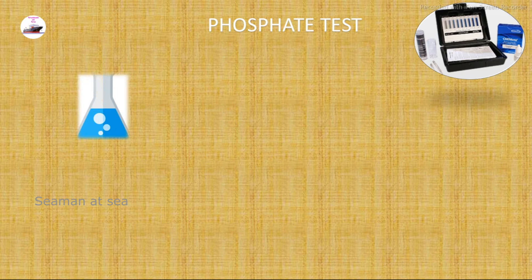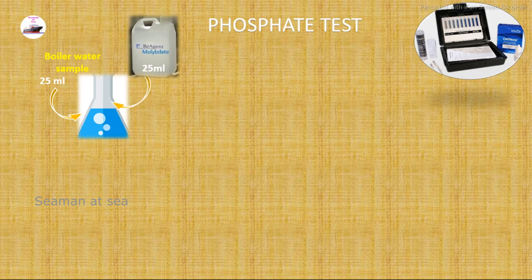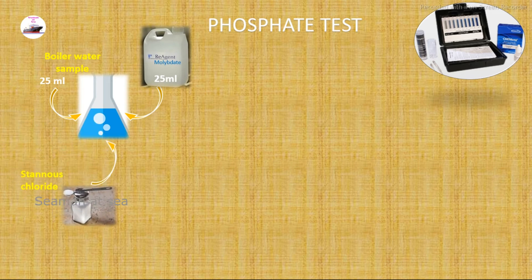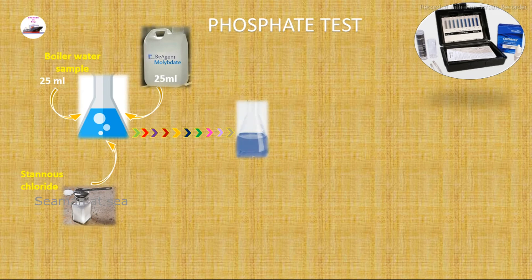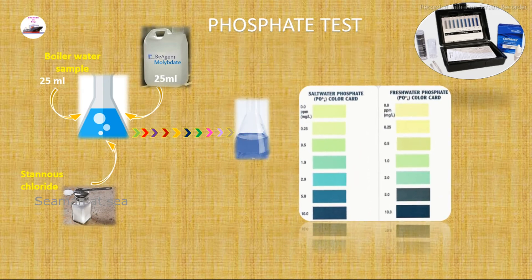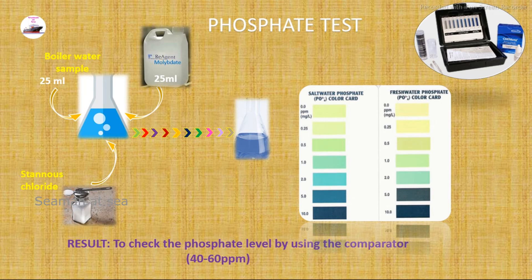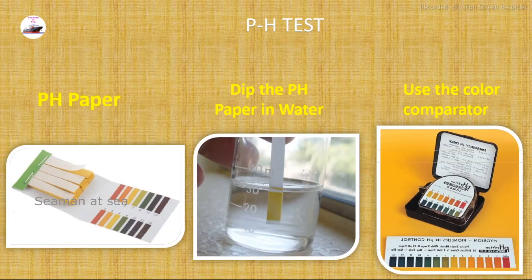For the phosphate test, we take 25 ml of filtered boiler water sample and add 25 ml of molybdate reagent, then add one small spoon of stannous chloride. We stir all together and the color starts to change to blue. We then use a color comparator to find out the phosphate value. That value should be 40 to 60 ppm.